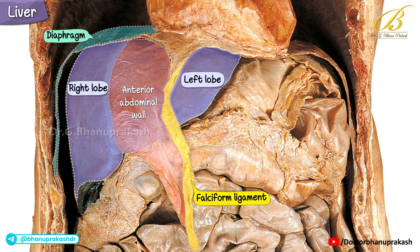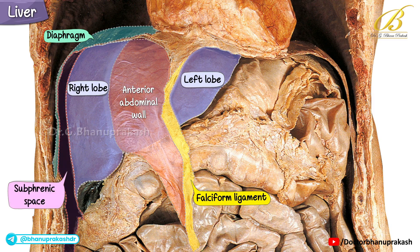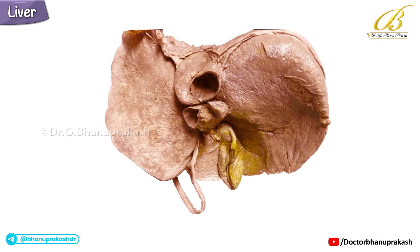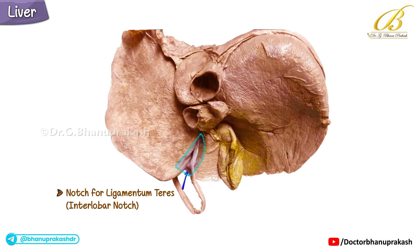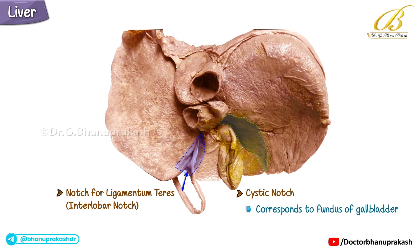Just below the diaphragm in the right lobe of the liver lies a small but important potential space called the subphrenic space. The liver shows two notches. First is the notch for the ligamentum teres, also called the interlobar notch. Second is the cystic notch, which often corresponds to the fundus of the gallbladder.